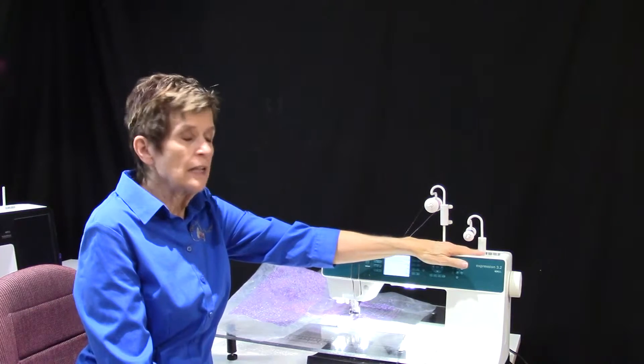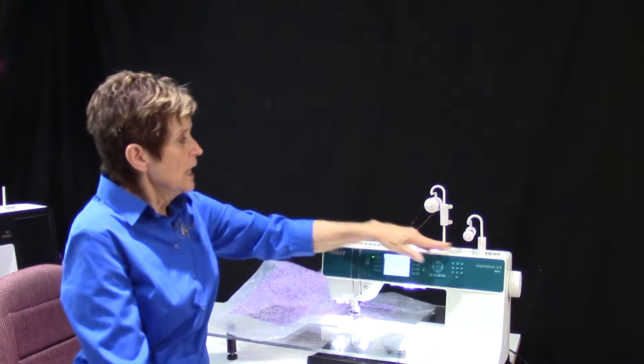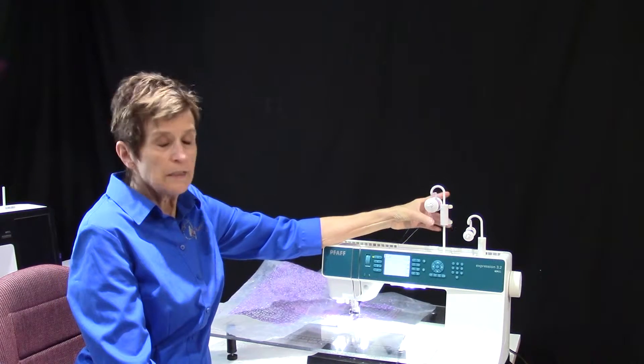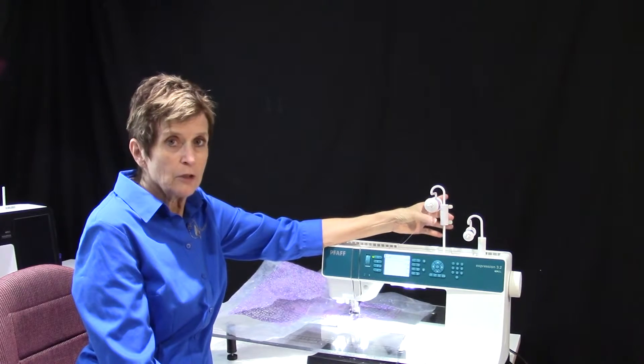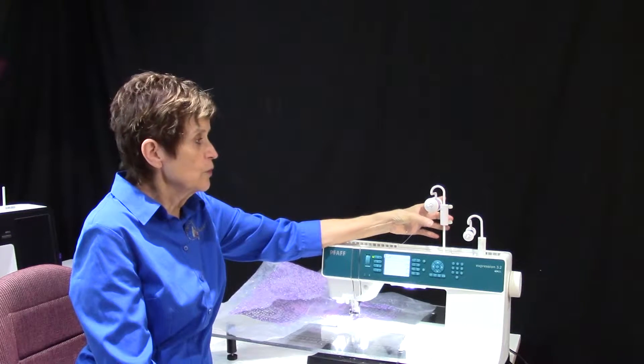I happen to have the metallic on the bobbin winder today. I have the 12 weight cotton on the vertical spool pin. It really doesn't matter which one goes where. It's just the way I have it today.